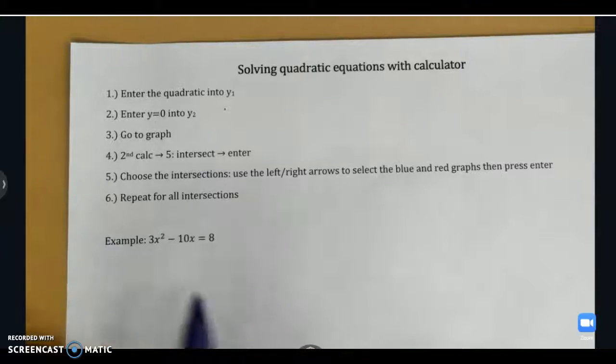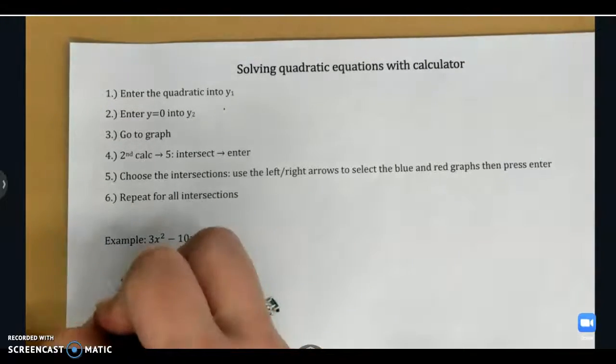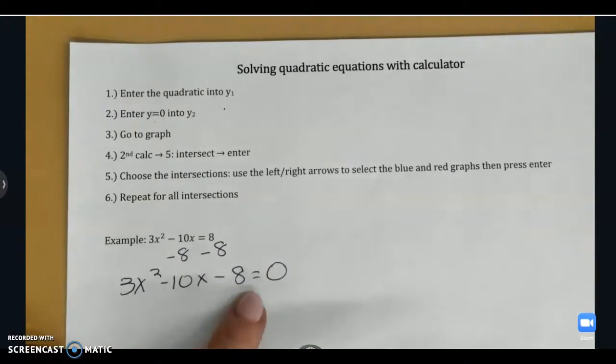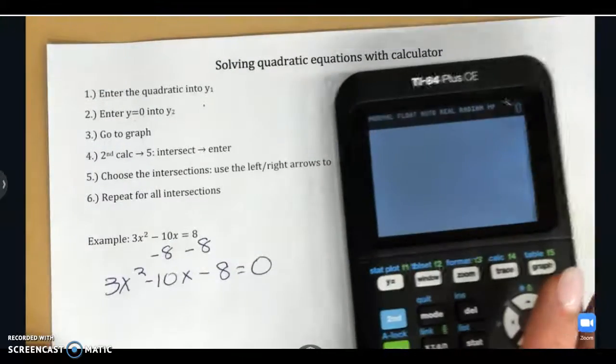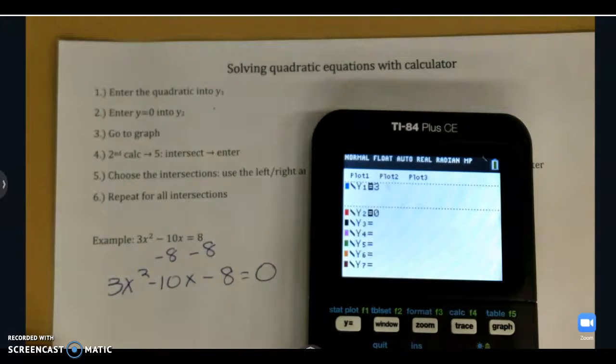So here's an example. I first need to put this in quadratic form, meaning everything is on the left and it's equal to 0. So this is what's going to go into Y1. I'm going to go to my Y1, type in 3x squared minus 10x minus 8, and then in Y2, we're going to put 0.